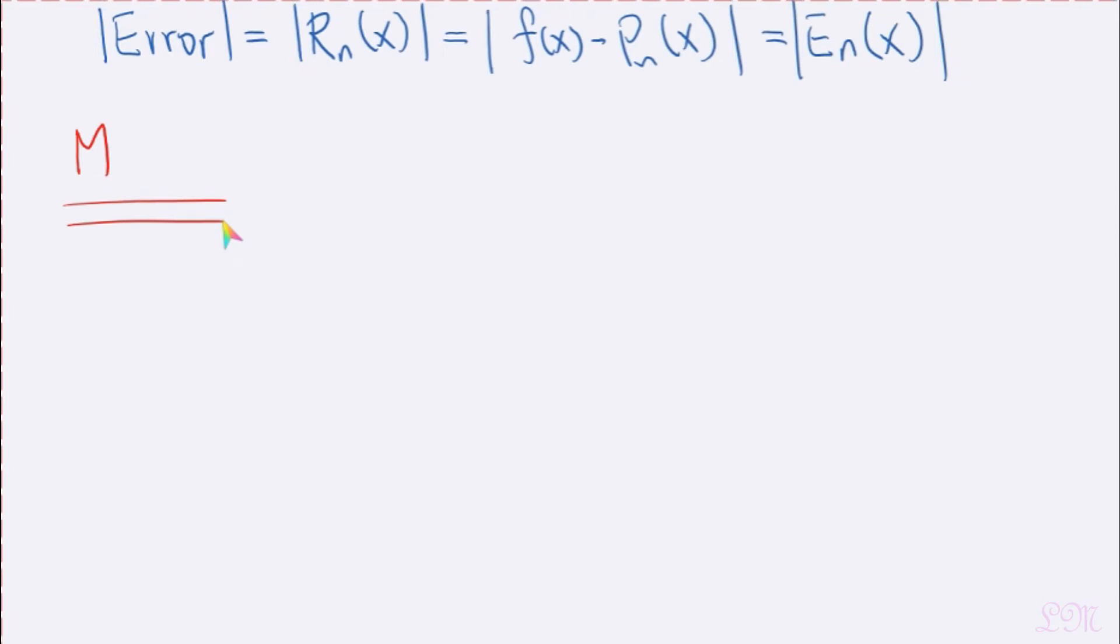sometimes you see K sub n plus 1. So either way, they stand for an upper bound of the absolute value of the n plus 1 derivative of f of x. If you're like, what? Maybe just look at what I wrote down on the screen. Anyways, so on the interval between x and a.